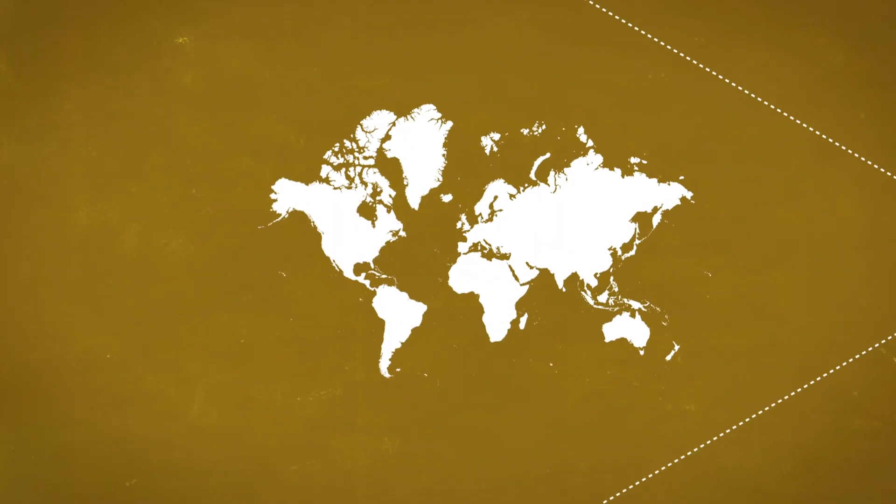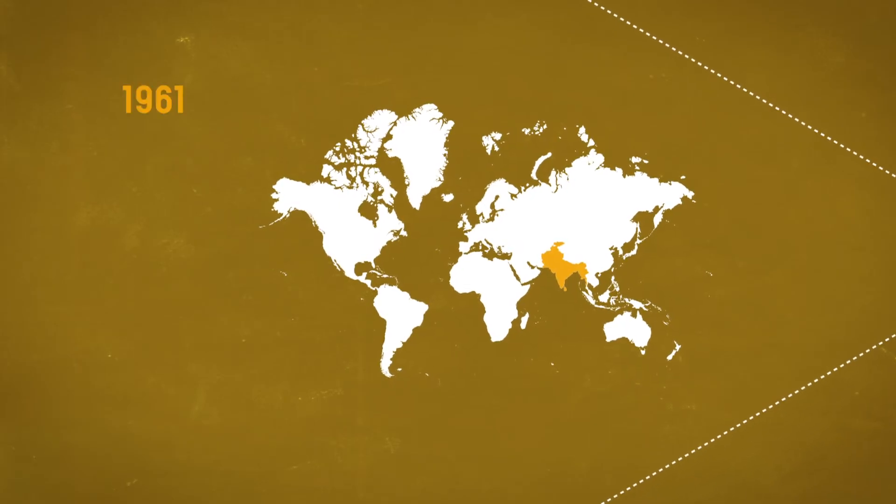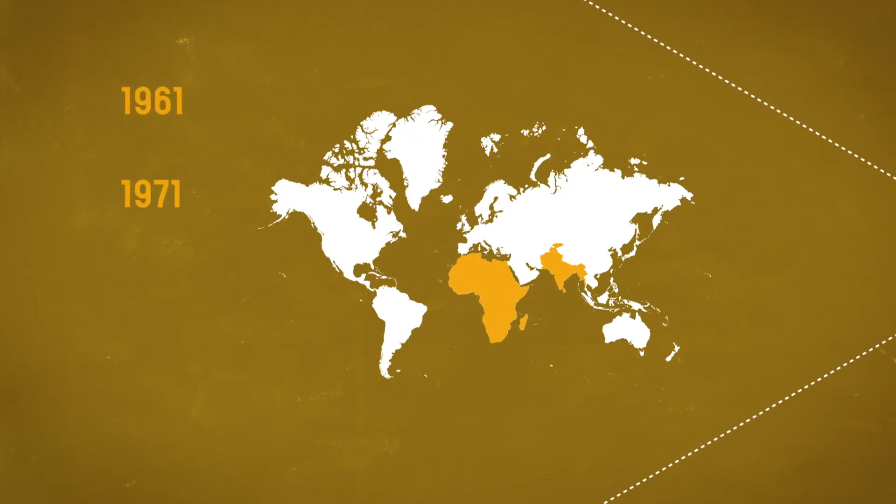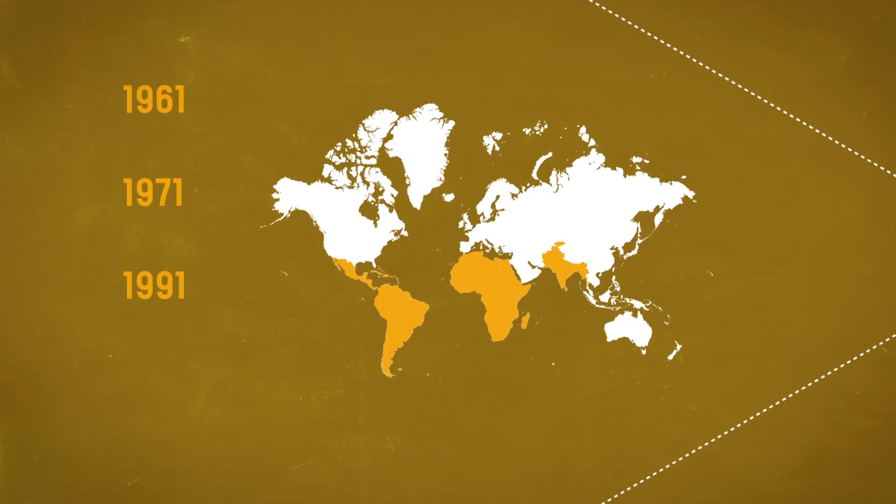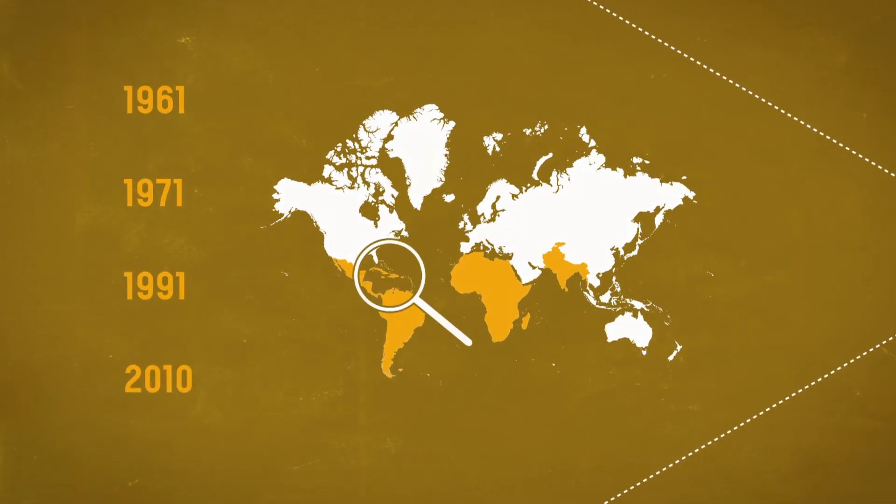The seventh pandemic began in South Asia in 1961, hit Africa in 1971, then South America in 1991, before moving on to its latest victims in Haiti in 2010.